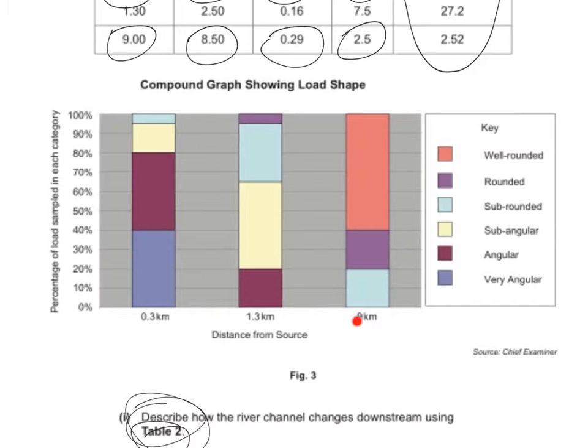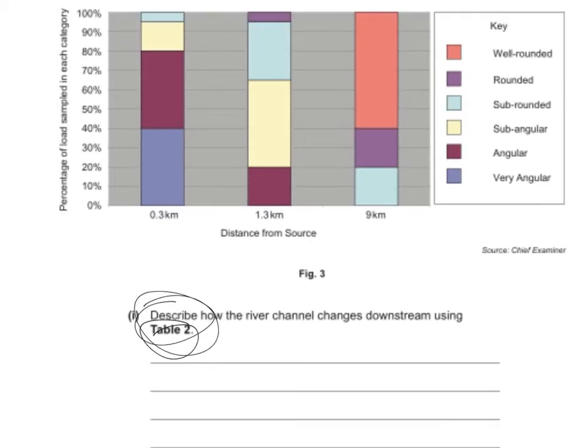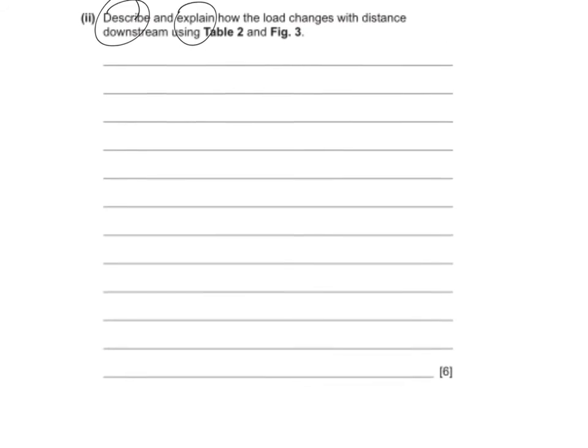Nine kilometers from the source, the most commonly occurring rock category is well-rounded, with 60%, and I would also state that there are no very angular, angular or subangular rocks at this point. That's your describe part of this question.